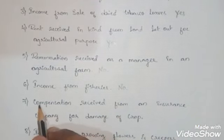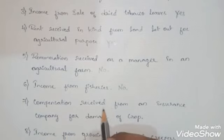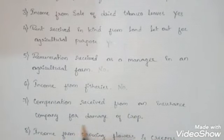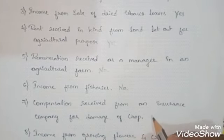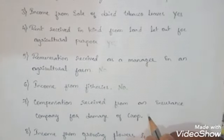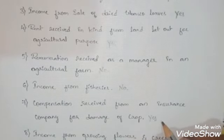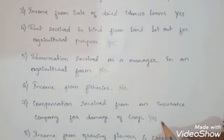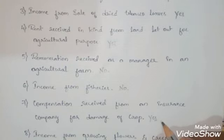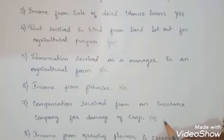Seventh: compensation received from an insurance company for damage of crop — the answer is yes. This is agricultural income because many farmers get crop insurance to face uncertainties, as the agricultural sector is totally dependent on nature. Therefore, the amount of claim received from an insurance company for damage of crop is treated as agricultural income.